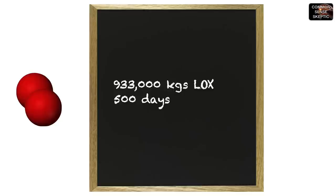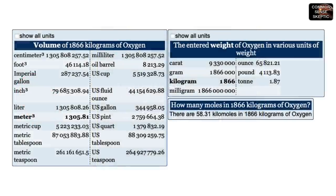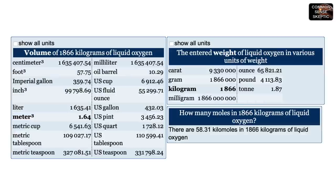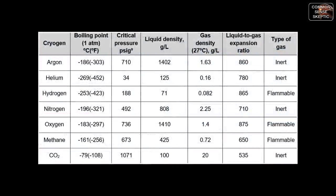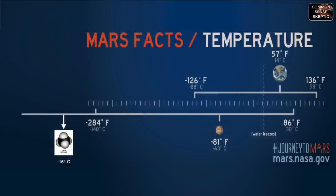Moving to oxygen: 933 tons of pure liquid oxygen in 500 days is 1,866 kilograms per day. At one standard atmosphere, 1,866 kilograms of oxygen gas takes up a volume of 1,305 cubic meters and contains 58.31 kilomoles. As a liquid it only occupies 1.64 cubic meters, but it must be kept chilled at minus 183 degrees Celsius — about 120 degrees colder than the average temperature on Mars.